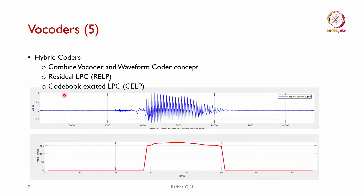To improve quality we refine the model of speech, improve accuracy of the model, and improve input to the speech coder. We can use hybrid coders that combine vocoder and waveform coder concepts. The LPC modifications include residual LPC (RELP) and codebook excited LPC (CELP). We can see the voiced portion and unvoiced region, and how the pitch is generated — the frame and pitch period on the y-axis — which is how we generate and transmit pitch in LPC.